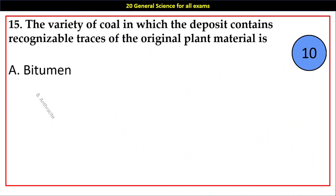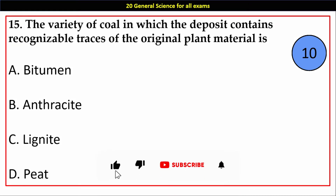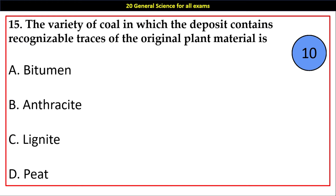Question number 15. The variety of coal in which the deposit contains recognizable traces of the original plant material is: Options A. Bitumen, B. Anthracite, C. Lignite, D. Peat. Answer: D. Peat.